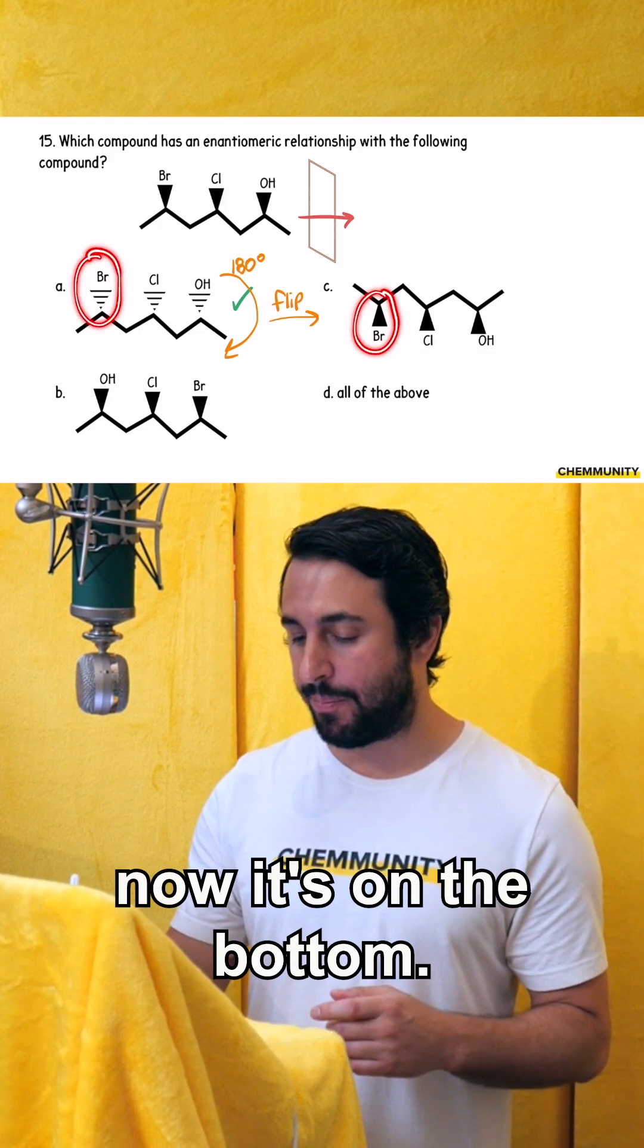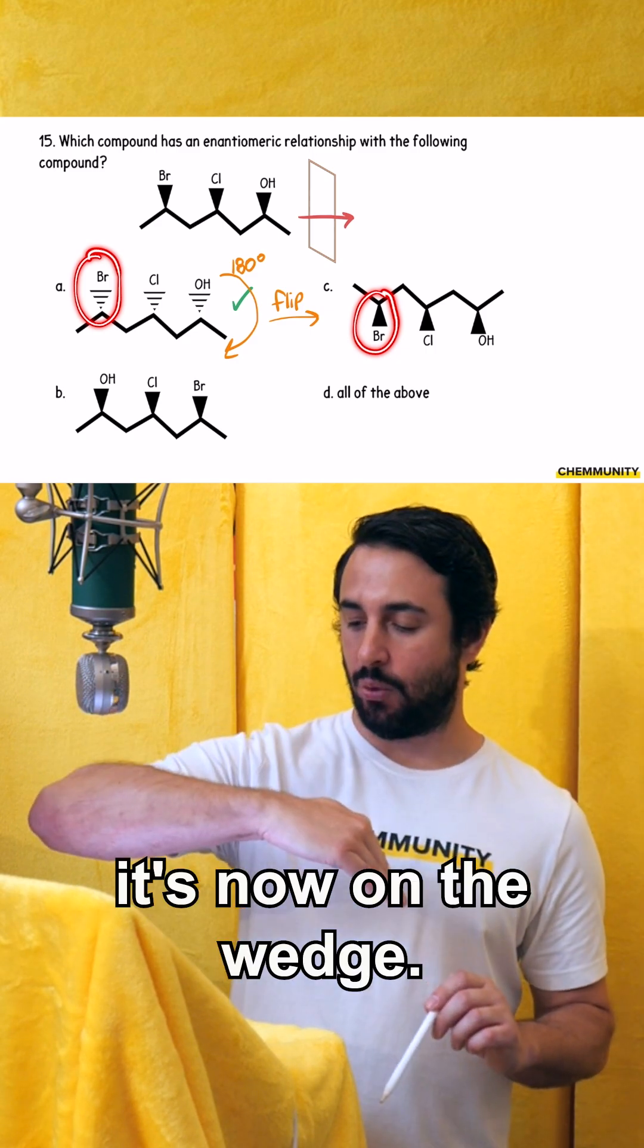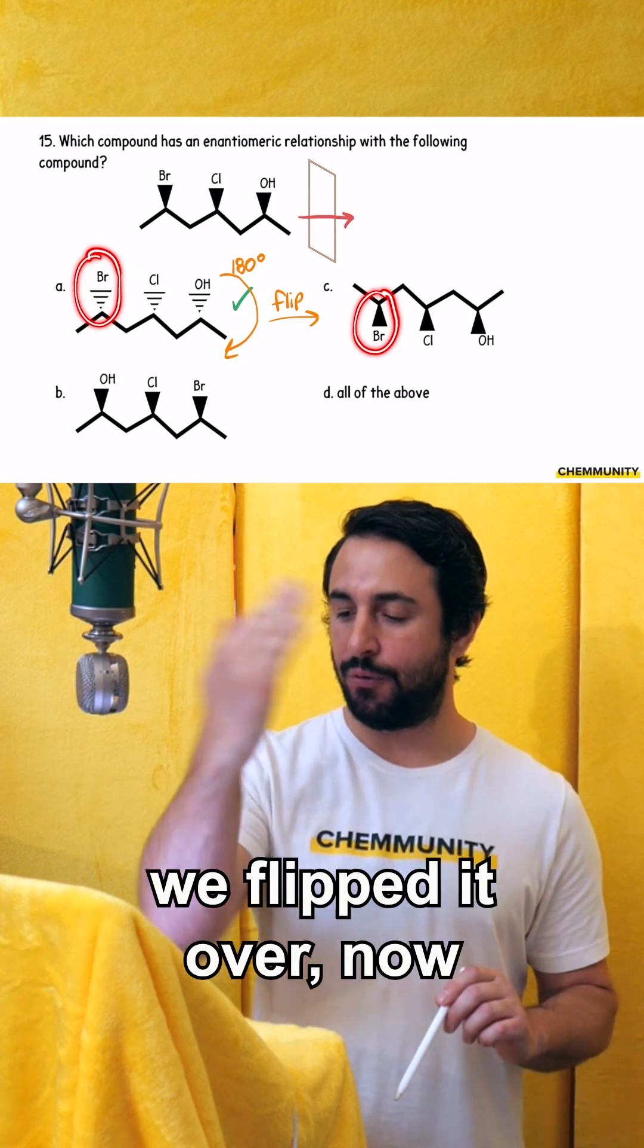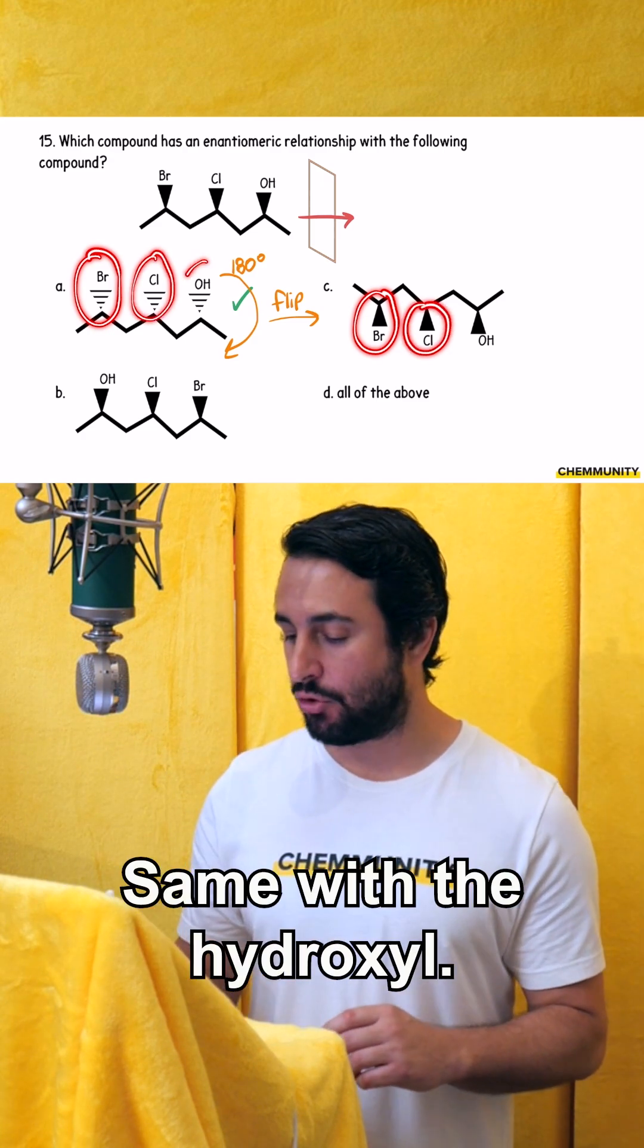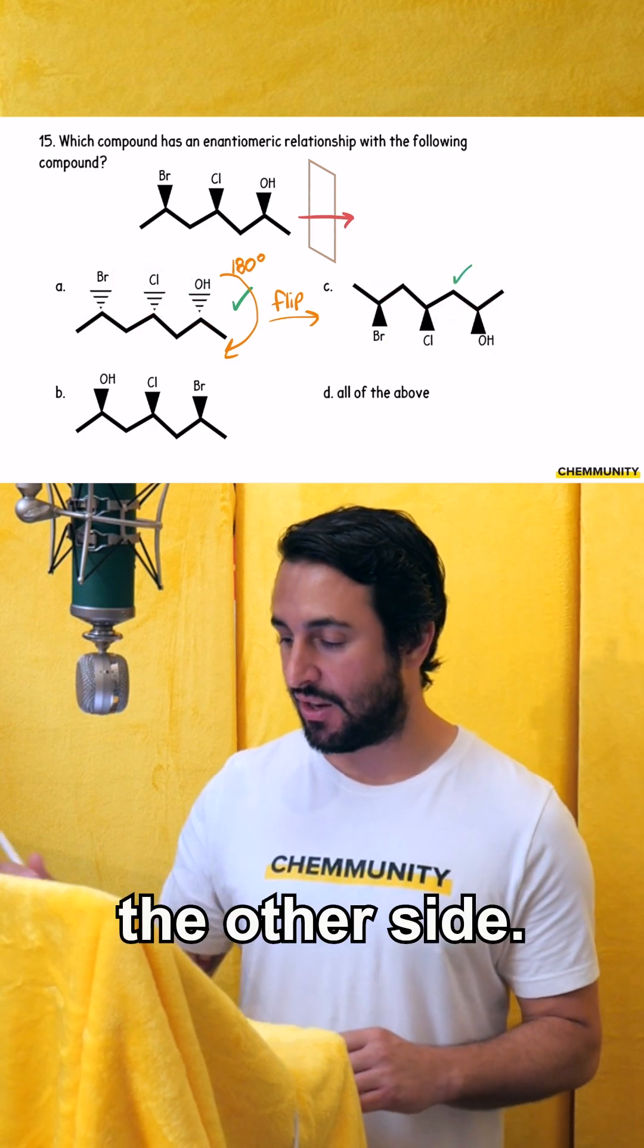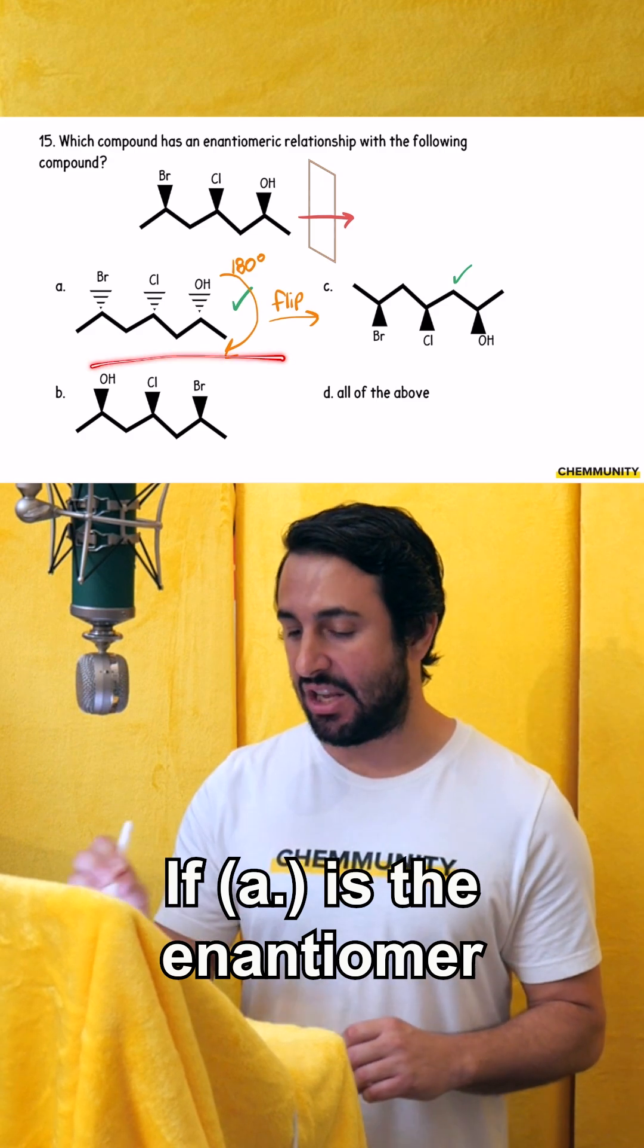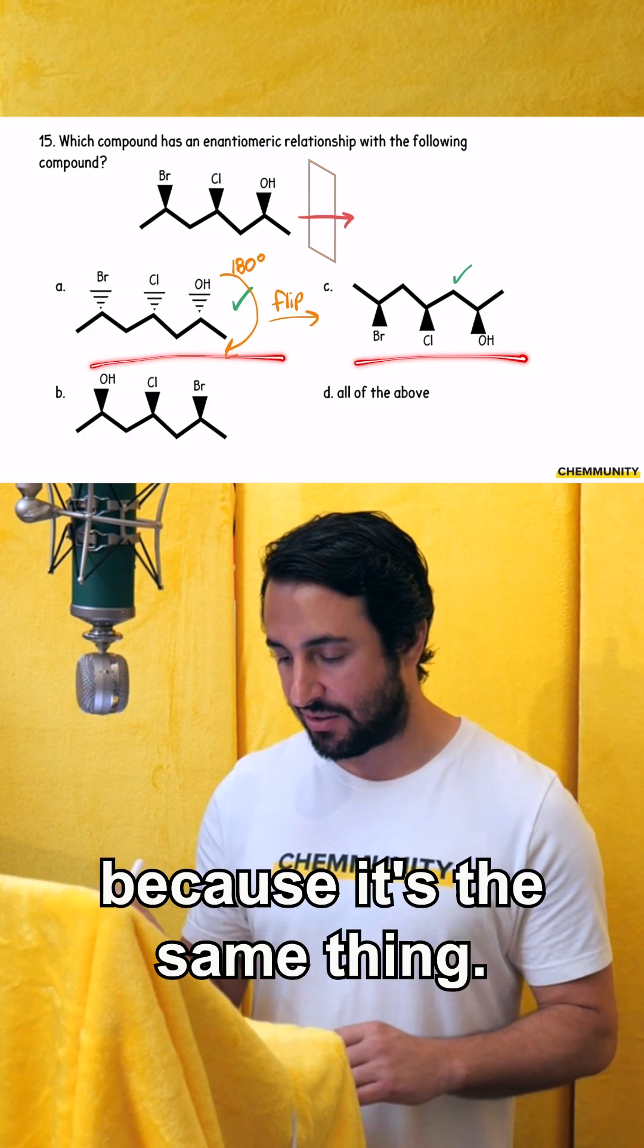Bromine was on the top. Now it's on the bottom, but instead of being on the dash, it's now on the wedge. It was going away from us. We flipped it over. Now it's going towards us. Same with the chlorine. Same with the hydroxyl. C is the same structure as A. We just flipped it onto the other side. If A is the enantiomer of the original compound, then C must also be because it's the same thing.